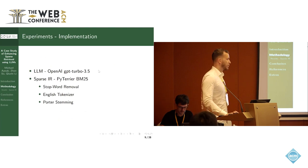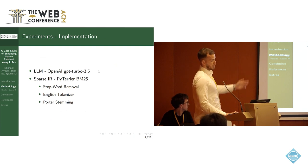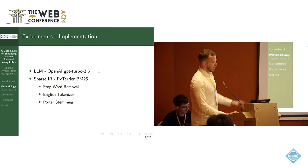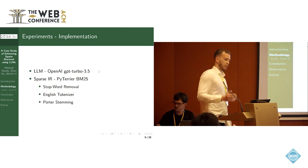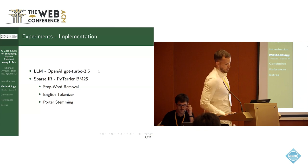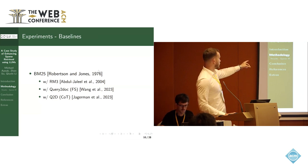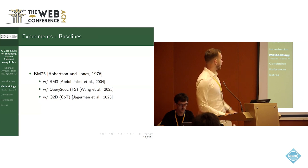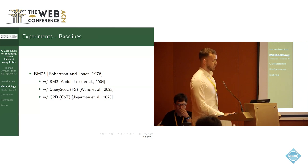For the experiments and implementation setup, I used GPT-3.5 Turbo from OpenAI. For the retrieval process, I used criteria with stop word removal, English tokenizer, and Porter stemming, to make the BM25 approach as time efficient as possible. The baselines I compare with are the classical approach RM3 (a pseudo-relevance feedback approach), and two other well-known generative query expansion methods: Q2D conducted by Wang in 2023, and a further study by Jägerman called Q2D where he applies chain-of-thought prompting.